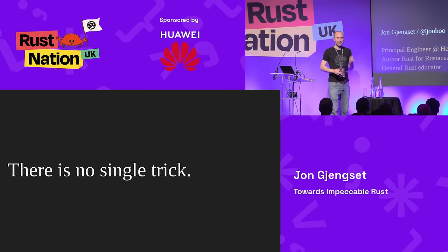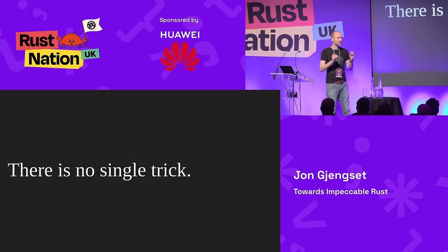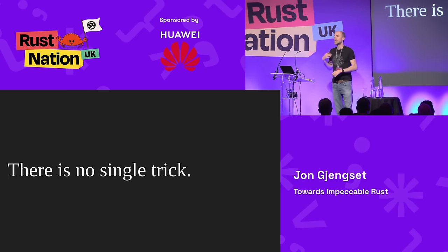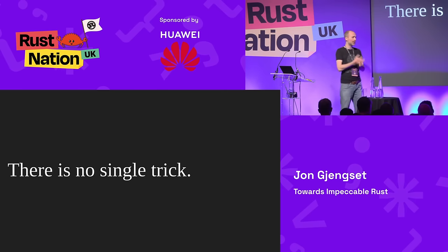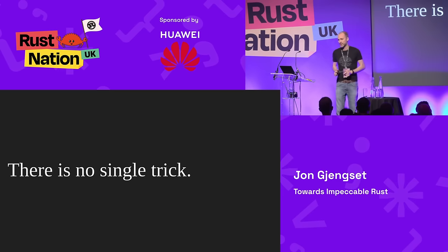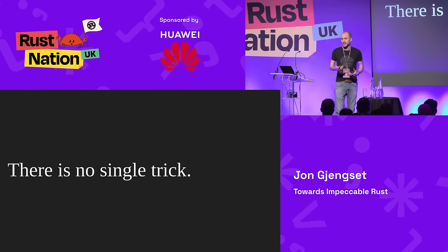The first thing to take away — maybe the main thing — is that there is no single trick. There is no one thing you can do to make your code impeccable. Instead, there are a number of techniques, tools, and telltale signs you should keep track of in your code bases. We'll go over some here, but it's not an exhaustive list, and there never will be such a list. This space is constantly evolving, we're getting new tools, we're discovering new techniques, and that's okay.